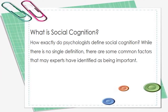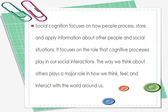What is social cognition? How exactly do psychologists define social cognition? While there is no single definition, there are some common factors that experts have identified as being important. Social cognition focuses on how people process, store, and apply information about other people and social situations. It focuses on the role that cognitive processes play in our social interactions — the way we think about others plays a major role in how we think, feel, and interact with the world around us.